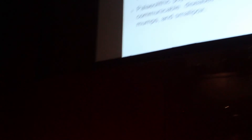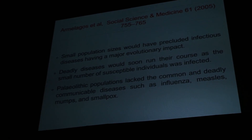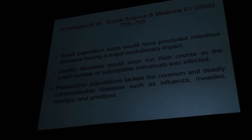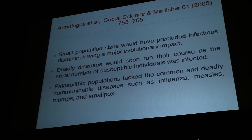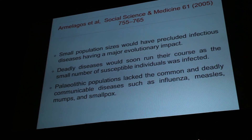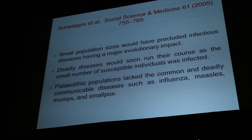This is a direct quote from that paper: 'Small population sizes would have precluded infectious diseases having major evolutionary impacts.' That is particularly significant, as we would like to suggest. 'Deadly diseases would soon run their course as the small number of susceptible individuals was infected.' And lastly: 'Palaeolithic populations lacked the common and deadly communicable diseases, such as influenza, measles, mumps, and smallpox.' So the general consensus is that hunter-gatherer populations in a Pleistocene context were largely free from the worst impacts of these pestilences — that's not to say there were no infectious diseases, but the impact was not great.